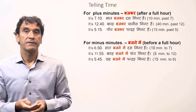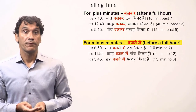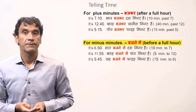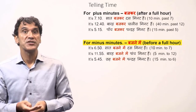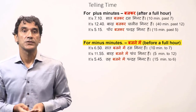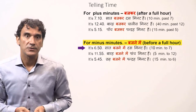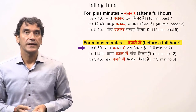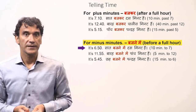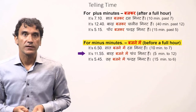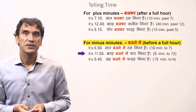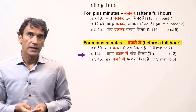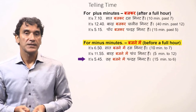For time with minutes to the full hour, the phrase Bajne mein is used. Saad bajne mein das minute hain — it is ten minutes to seven. Bara bajne mein paanch minute hain — it is five minutes to twelve. Shay bajne mein pandrah minute hain — it is fifteen minutes to six.